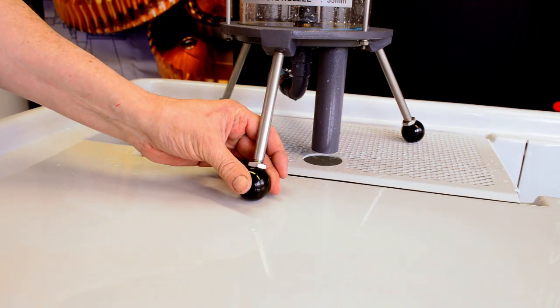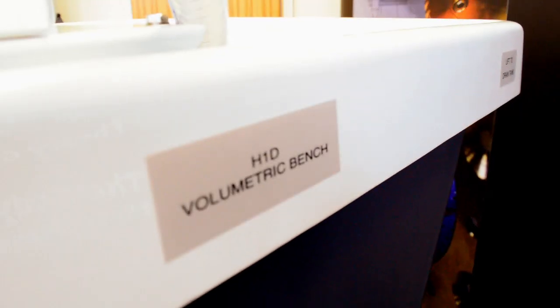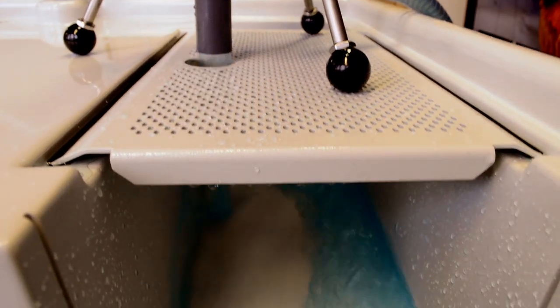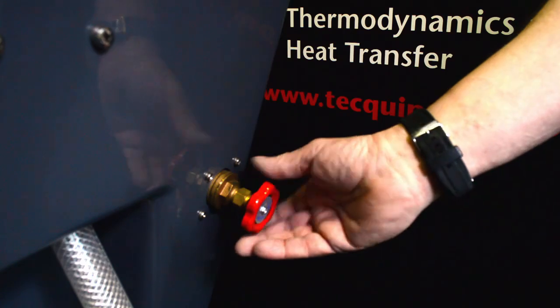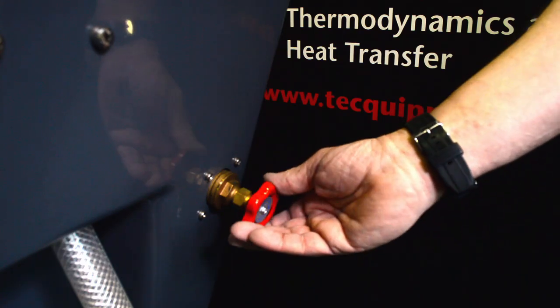The H8 is on legs with levelling feet and mounts on top of Techquipment's hydraulic bench. A direct tube in the base of the cylinder directs water back into the hydraulic bench, allowing for accurate flow measurement.